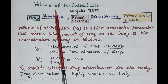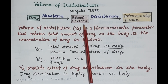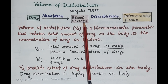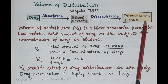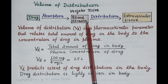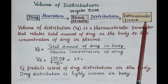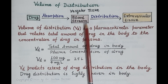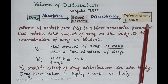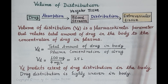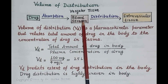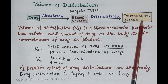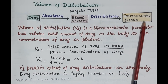Volume of distribution determines the distribution of drug in the vascular tissue and in the extravascular tissue. Vascular tissue refers to the blood, while extravascular tissues are the tissues other than blood present in the body. A drug is distributed in the blood and also in extravascular tissues throughout the body. Volume of distribution predicts how much drug will be confined to the blood and how much will be distributed to the extravascular tissue. When a drug is administered, it is absorbed into the bloodstream, circulates throughout the body, and is distributed from the plasma to the body tissues — including the site of action.